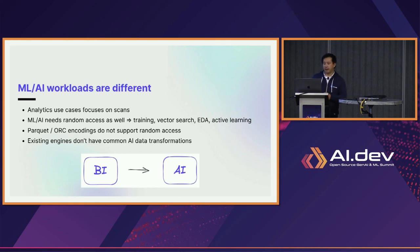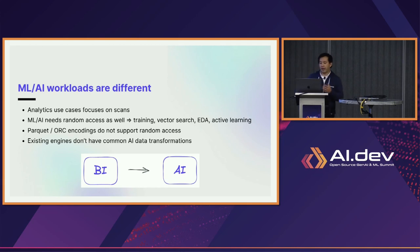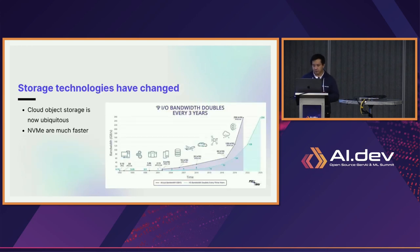As a result, existing engines built on top of Parquet — including Iceberg, Delta, Hudi, and so on — often just don't have the common AI transformations that you need. And lastly, we've seen this explosion in storage technologies.